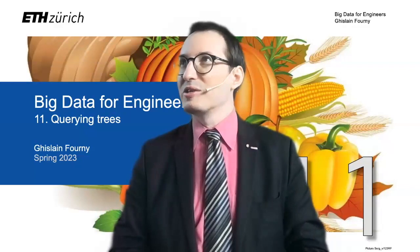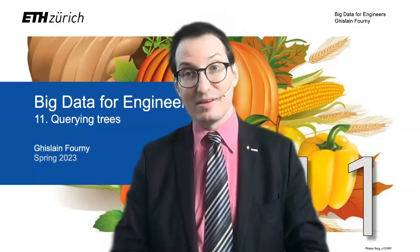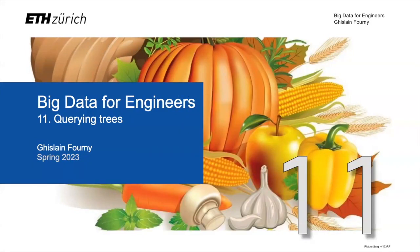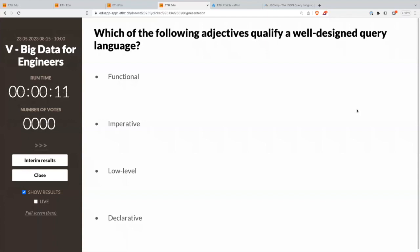I'll start with the questions that I would like to ask you on Clicker, and then we'll proceed with the rest of the lecture. This is my first question to you: which of the following adjectives qualify a well-designed query language? Multiple answers possible. Functional, imperative, low-level, declarative.